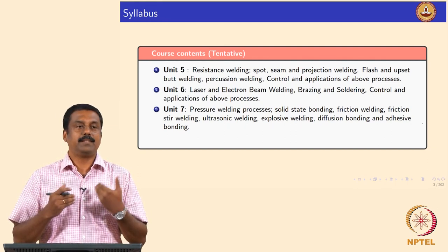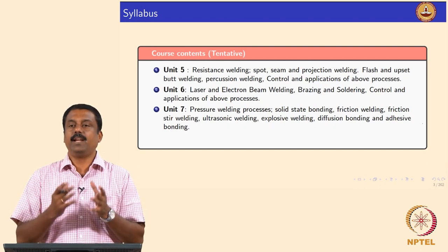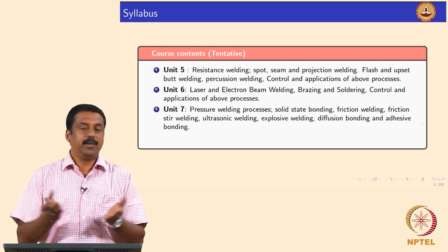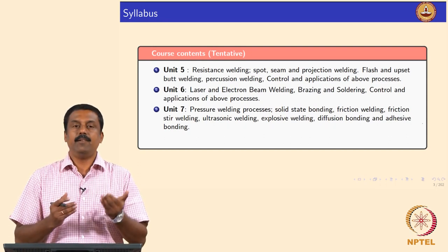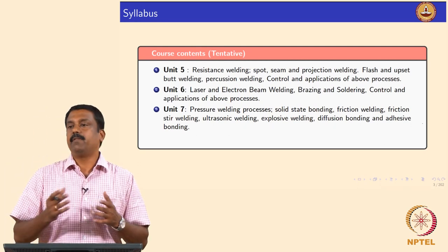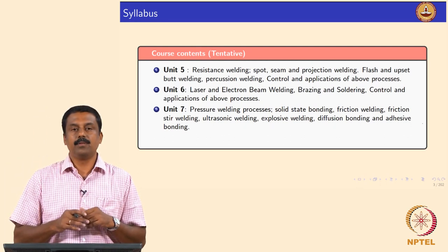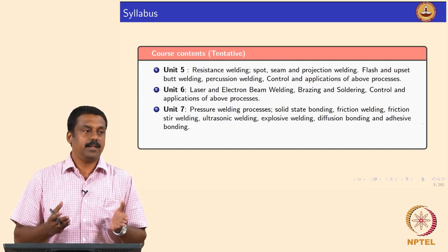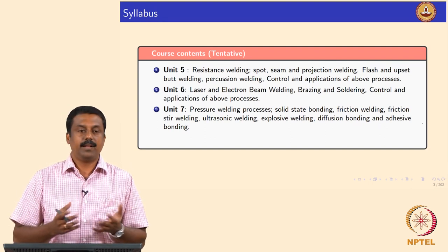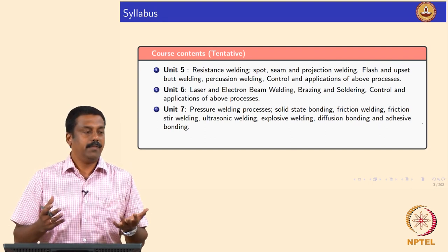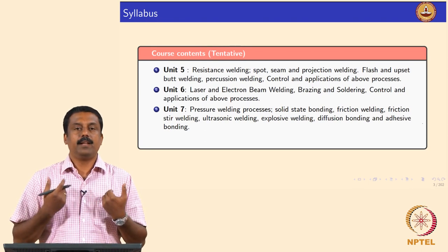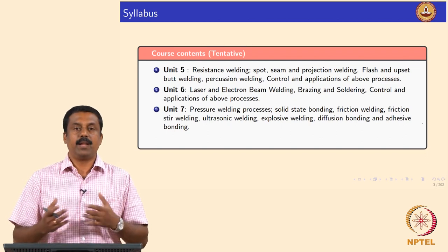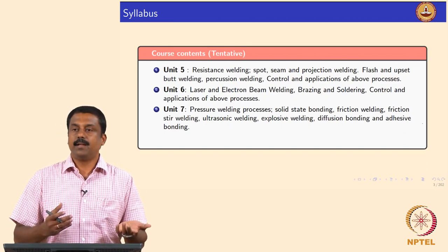The last chapter covers solid state welding processes, where we do not heat the material as high as in arc welding, laser welding, or resistance spot welding. It is done at a slightly elevated temperature but not involving a liquid or melting. Various processes are being commercialized in solid state welding — for example friction welding, friction stir welding, ultrasonic welding, and explosive welding, though commercial application of the latter is still limited.